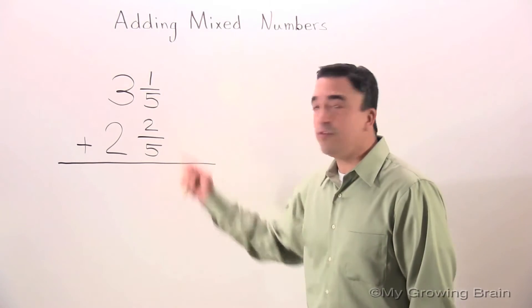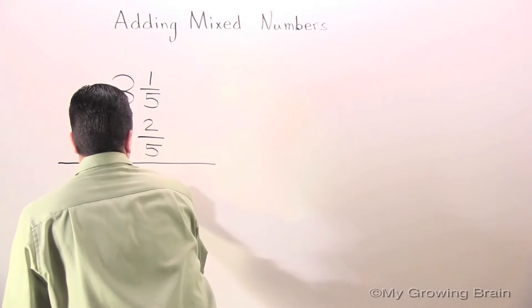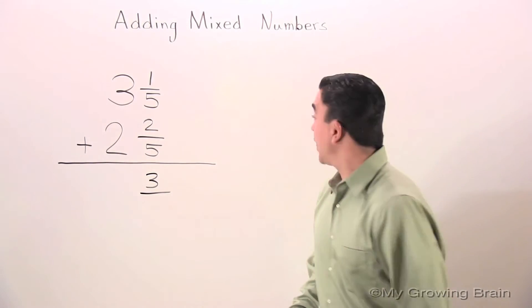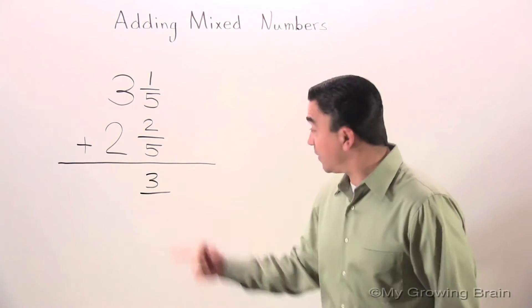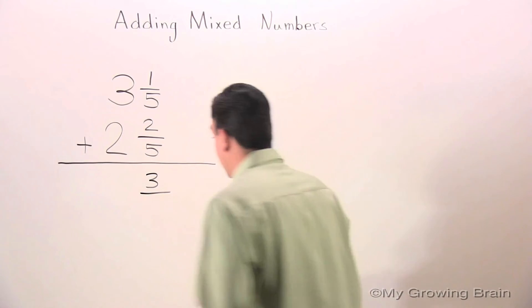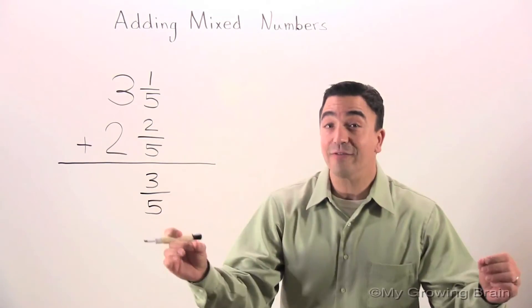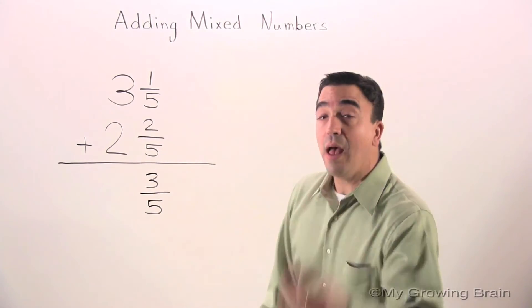One plus two equals three. Now we look at the denominators - and don't forget, the denominators stay the same - so let's just put a five down there. Last but not least, we have to add the whole numbers: three plus two is five.